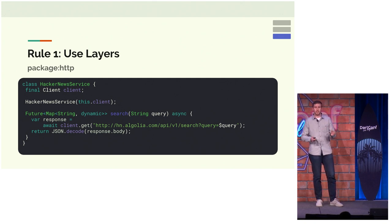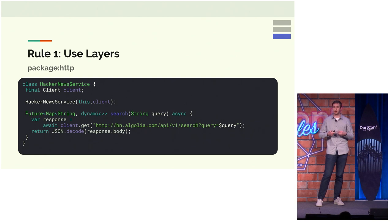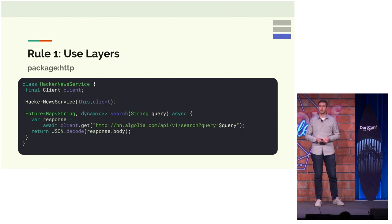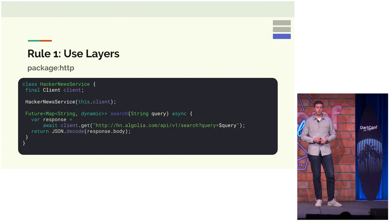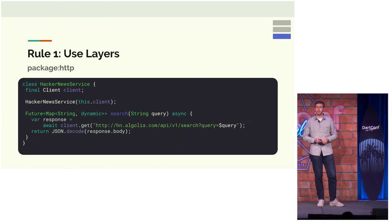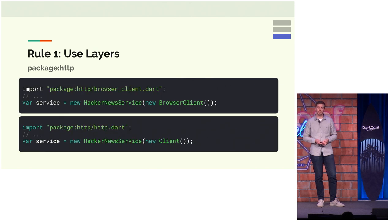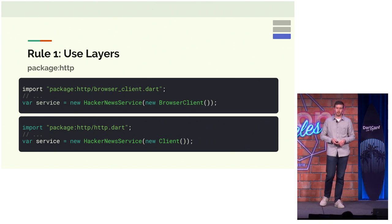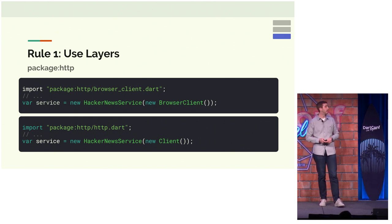Package HTTP allows us to write our services in a cross-platform way — it's a cross-platform HTTP request library. Our Hacker News service asks for a generic HTTP client. When our app starts up, we know what client to give our services. On Browser, we use a Browser client, and on Flutter, we use an IO client. This is awesome.